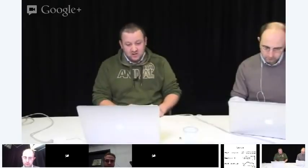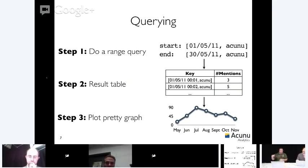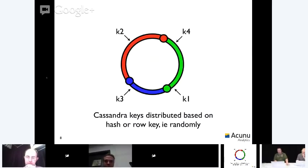To query the index, you just say give me all mentions between these two ranges. You get something back like this, and then you can plot a pretty graph or whatever you like to do. Now that all looks very easy. It's like, okay, that was easy, why did we bother doing this? Unfortunately in Cassandra, keys are distributed randomly around the ring. We do this for a very good reason, to get a very balanced distribution of your data across the nodes.